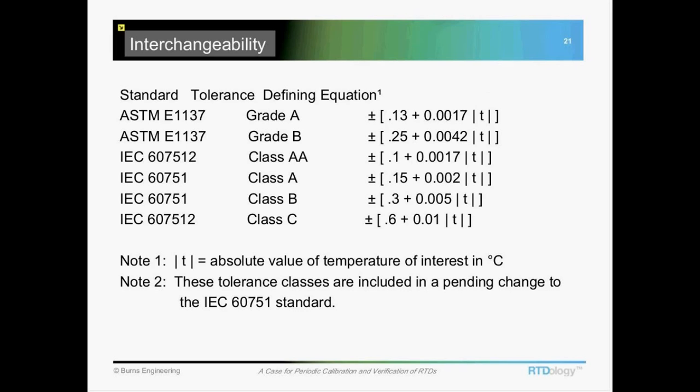There's some equations you can use here to calculate what the tolerance is at various temperatures. If we look at the first one, it's a grade A tolerance band. So it would be 0.13 plus 0.0017 times the absolute value of the temperature in degrees C. So if you're at 121 degrees C, we just 0.017 times 121 plus 0.13. And that will give you your tolerance band at that temperature.